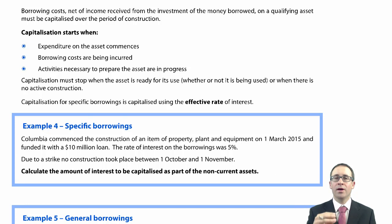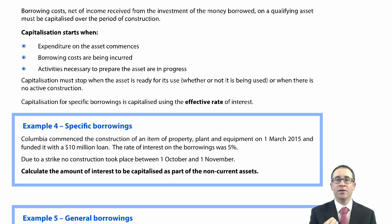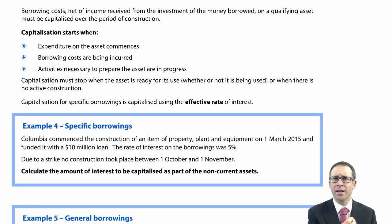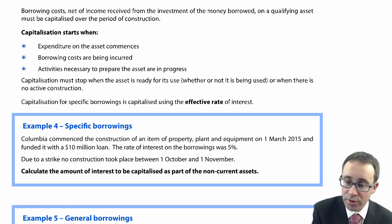Remember what borrowing costs are all about. First of all, you have taken out a specific loan to finance the construction of an asset. Any interest that you incur, instead of debiting your finance costs, you can debit the cost of the asset. If you look at the notes, it says borrowing costs net of income received.